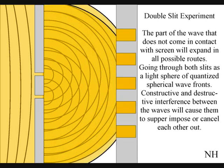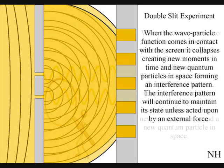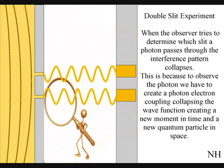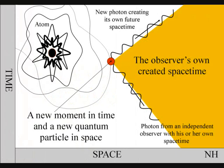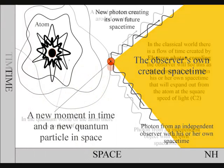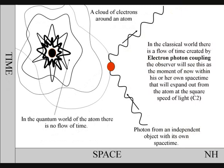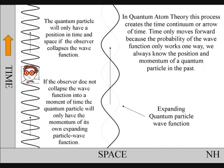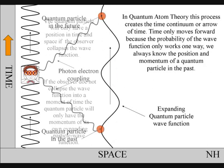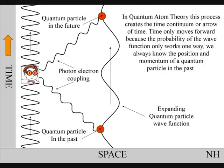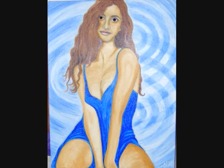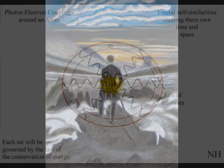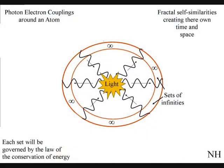When the observer tries to determine which slit a photon passes through, the interference pattern will collapse. This is because to observe the photon, we have to create a photon-electron coupling, collapsing the wave function and creating a new moment in time and a new quantum particle in space. Just like in Newton's first law of motion, the interference pattern will continue to maintain its state unless acted upon by an external force. The only problem is the external force can only see one moment of infinity.